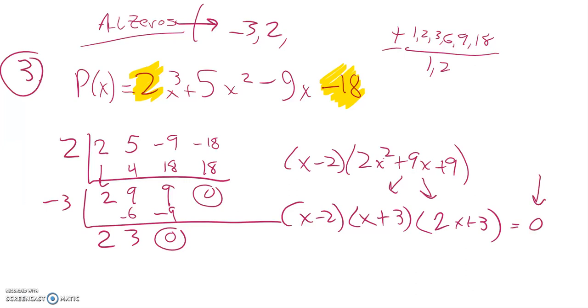I'm looking for zeros. So I already know 2. I already know negative 3. So now I've got to figure out what this is. You might see that it's negative 3 halves right off the bat. If you don't, you're solving that for 0. So set it equal to 0. Subtract 3. Divide by 2. x is negative 3 halves.